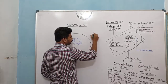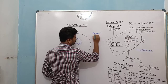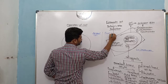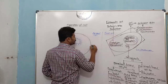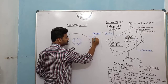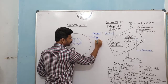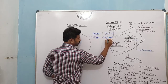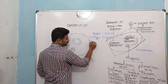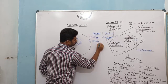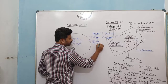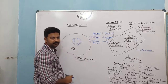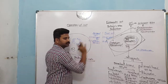Comparing animal cells and plant cells: difference number one — cell wall is absent in animal cells, but cell wall is present in plant cells. Difference number two — centrosome is present in animal cells, but centrosome is absent in plant cells.